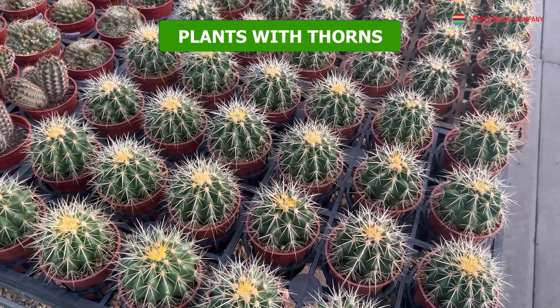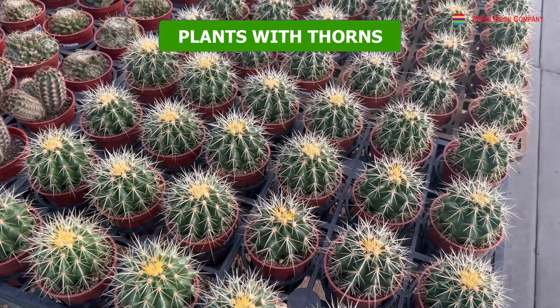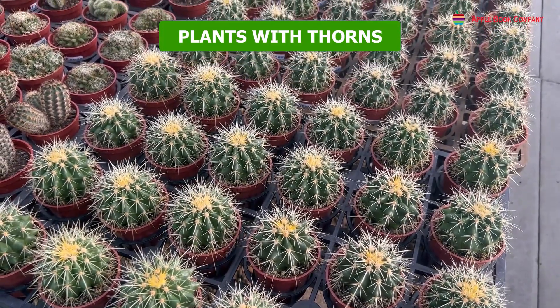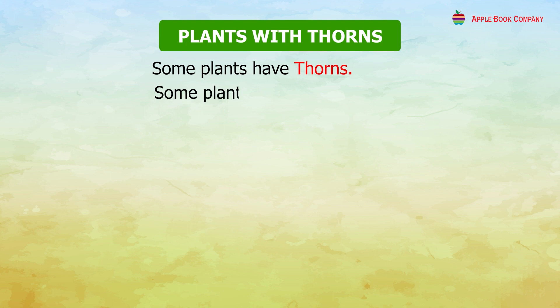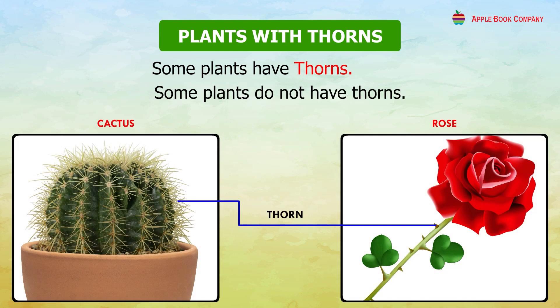Let us learn about plants with thorns. Some plants have thorns and some plants do not have thorns. For example, a cactus has thorns. A rose too has thorns.